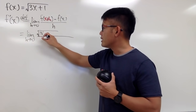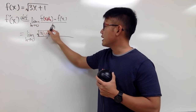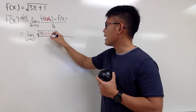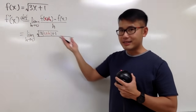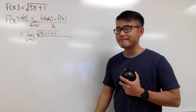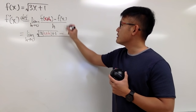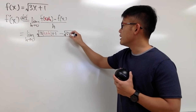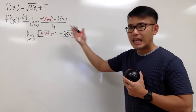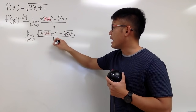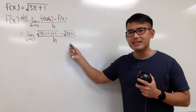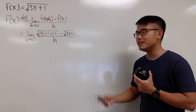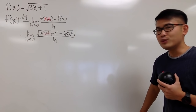We put down parentheses x plus h right here, then close that. We still have the plus 1 after that, so that's it for that first part. Then you minus f(x), which is just square root of 3x plus 1, everything over h. So this is the setup, and now we just have to do some algebra to see if we end up with a nice expression.